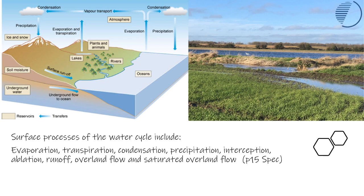Today we're looking at the process by which water evaporates from the oceans, condenses in the atmosphere, is transferred over the land, falls as rain, and then we get surface runoff or overland flow. We're looking at the two types of overland flow that exist.